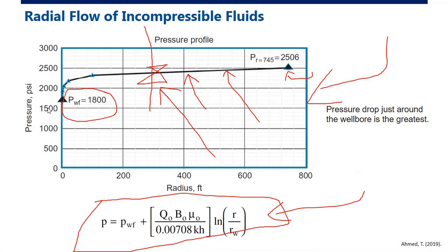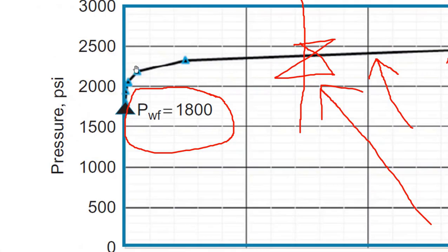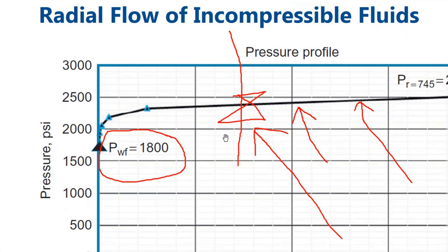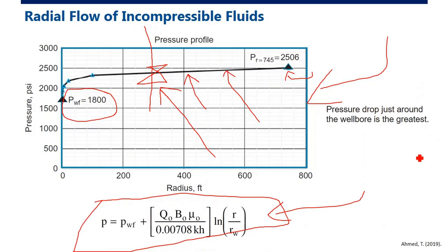Looking at the pressure profile picture, the biggest pressure drop occurs close to the well — this is characteristic of radial flow. As you approach the well, the flow area becomes smaller and smaller, so the pressure drops faster near the wellbore. The pressure drop just around the wellbore is the greatest.